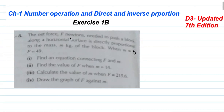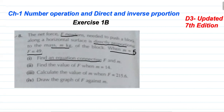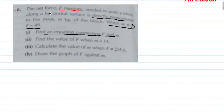Question number 8: the net force F Newtons needed to push a block along a horizontal surface is directly proportional to the mass M of the block. When M equals 5, F equals 49. Find an equation connecting F and M. Note that there are two quantities: force and mass. This is a direct proportion.